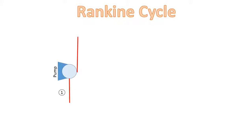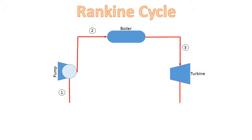The Rankine cycle consists of four main processes. The first one is an isentropic compression in a pump. The second one is a constant pressure heat addition in a boiler. The third one is an isentropic expansion in a turbine. And the fourth one is a constant pressure heat rejection in a condenser. This is known as the ideal Rankine cycle.